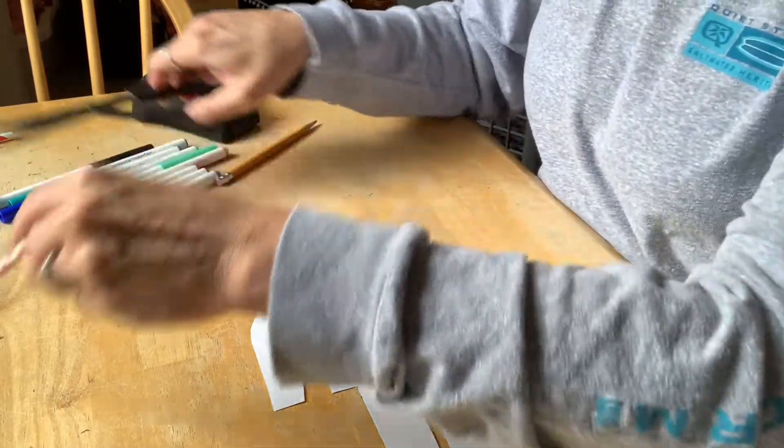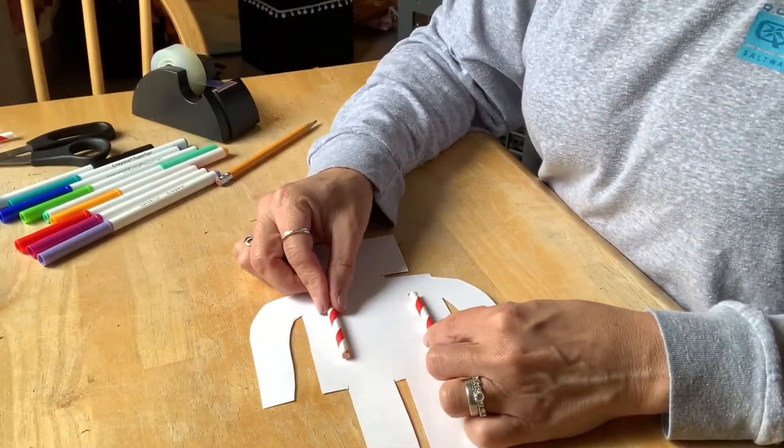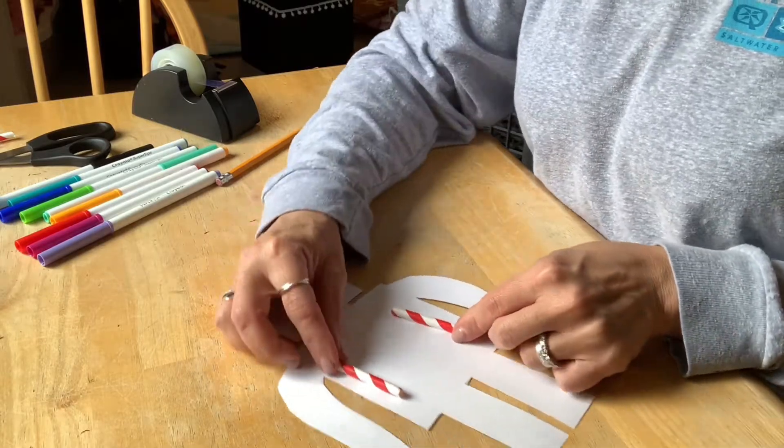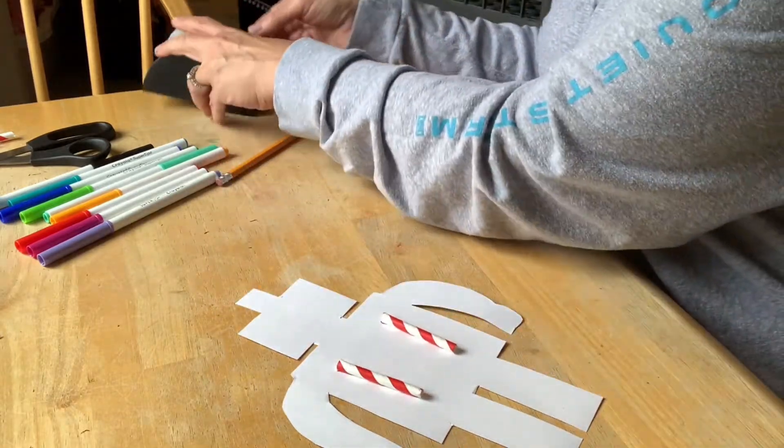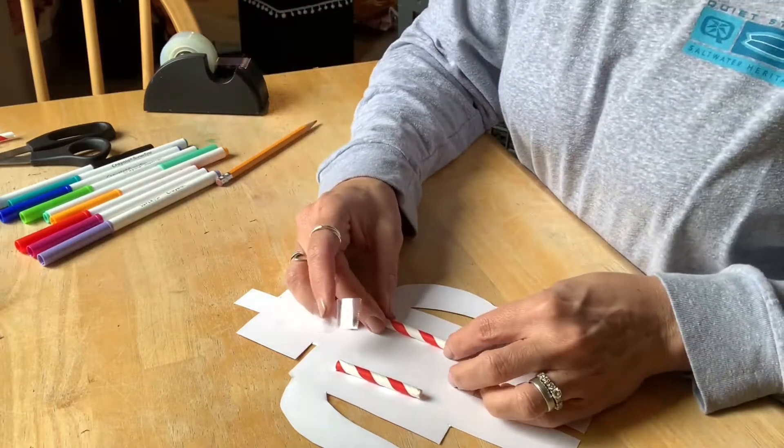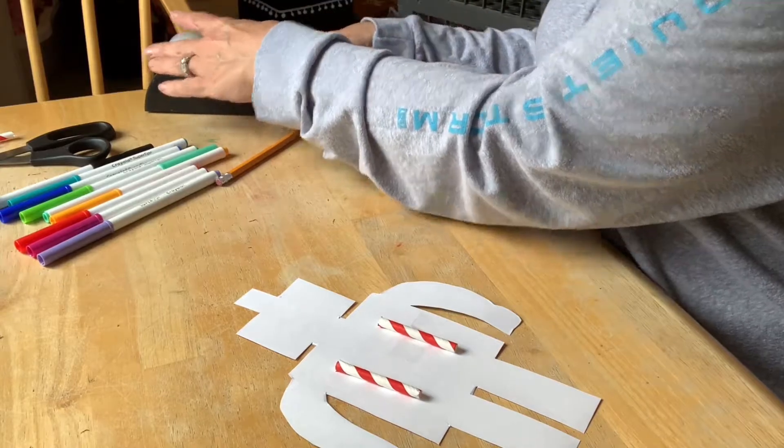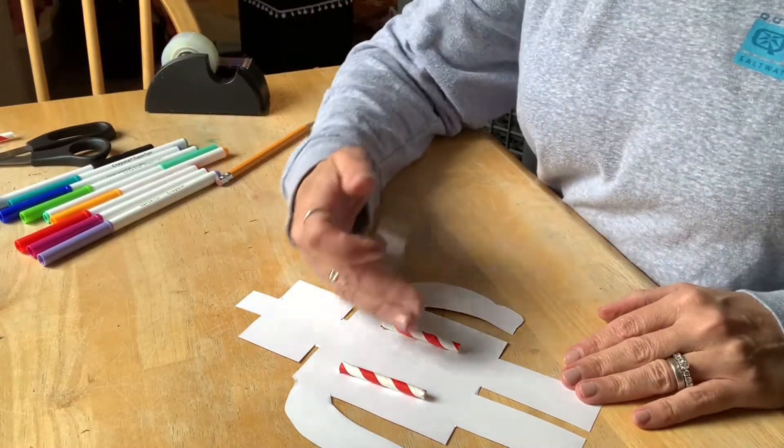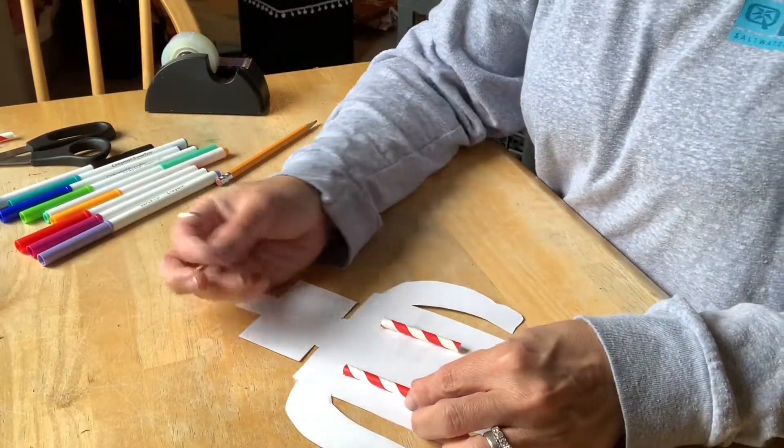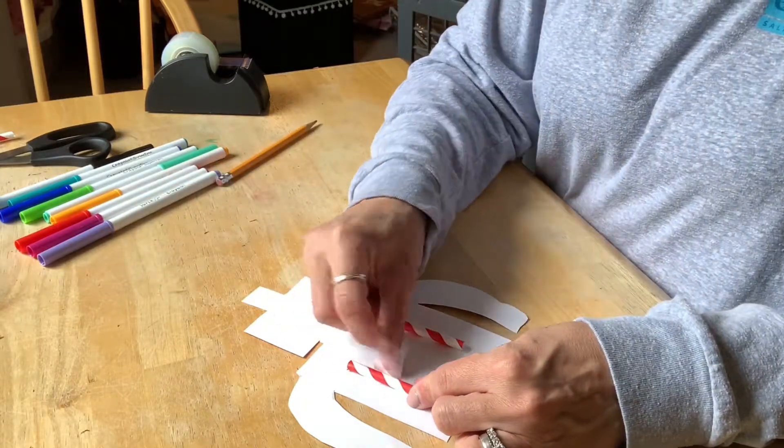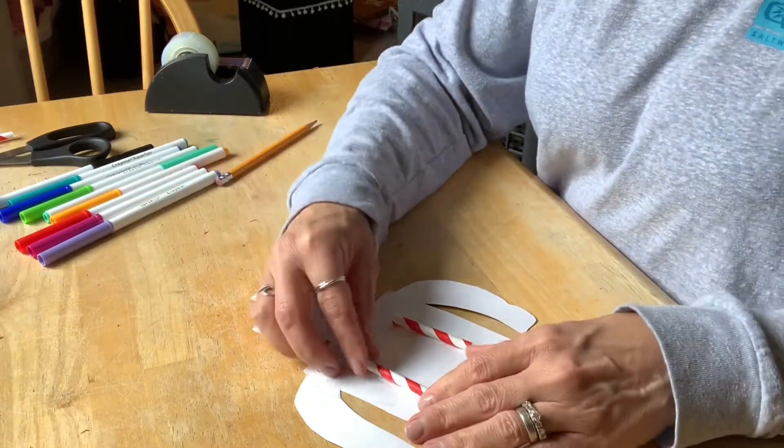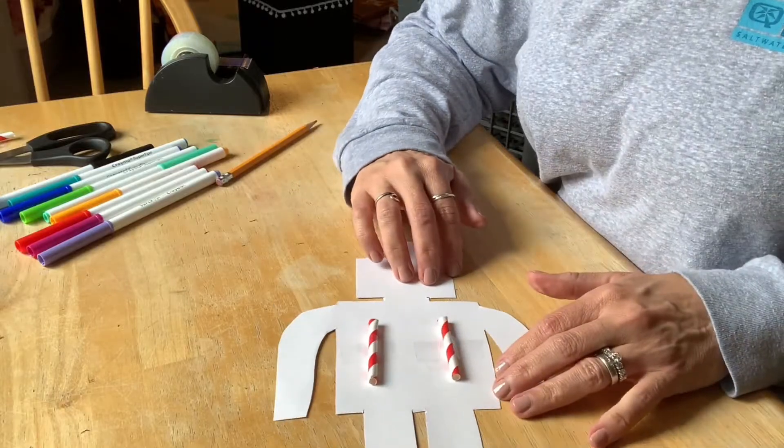We're going to tape those down just like that. It doesn't have to be perfect, but make sure that the bits of straw are parallel to each other. That means that they're side by side.